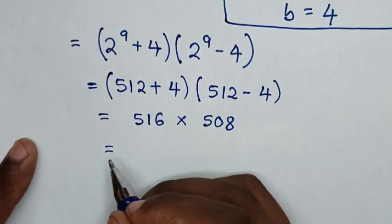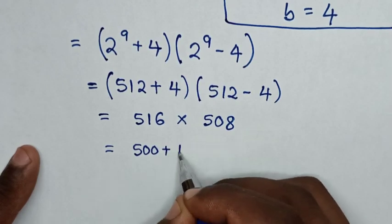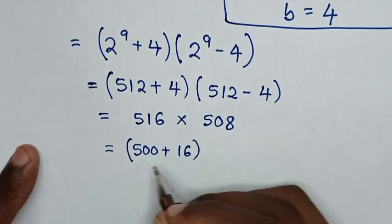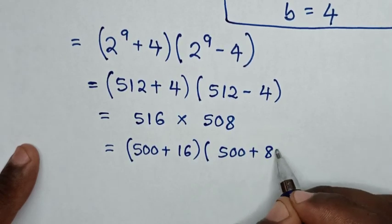So we can rewrite this as (500 plus 16) times (500 plus 8).